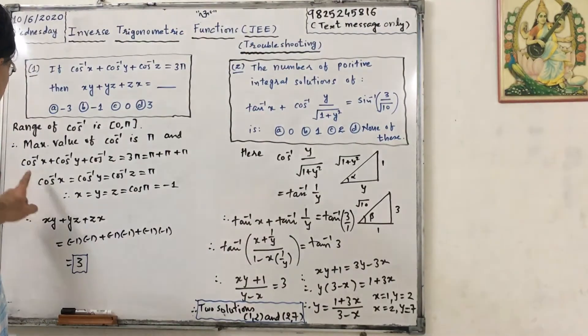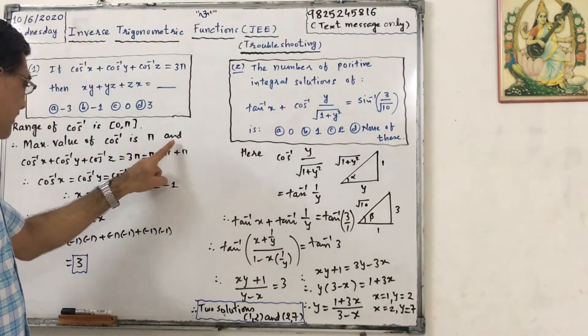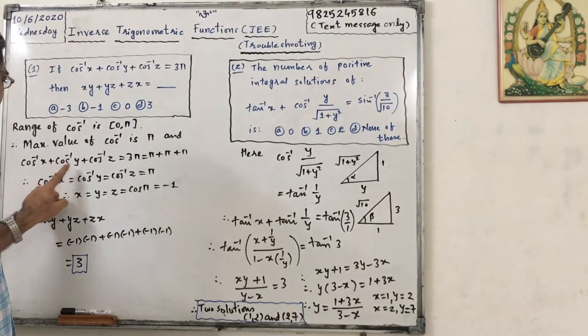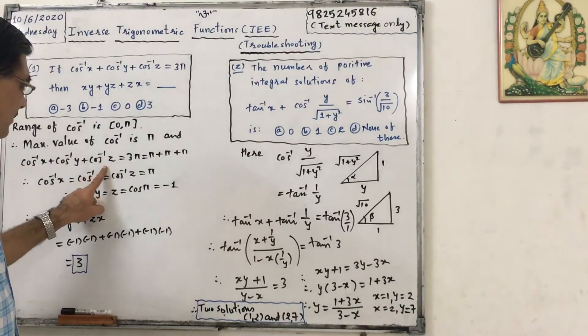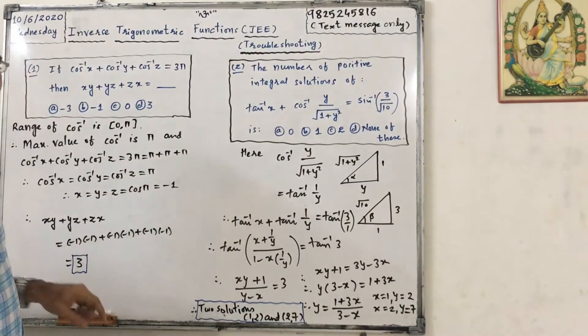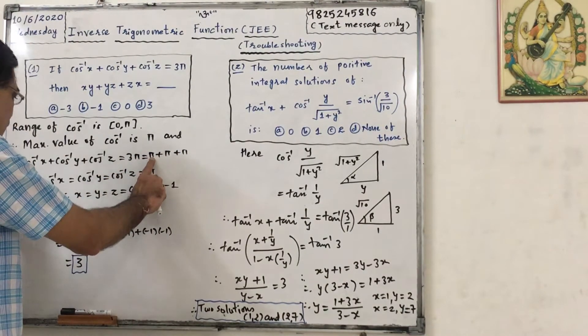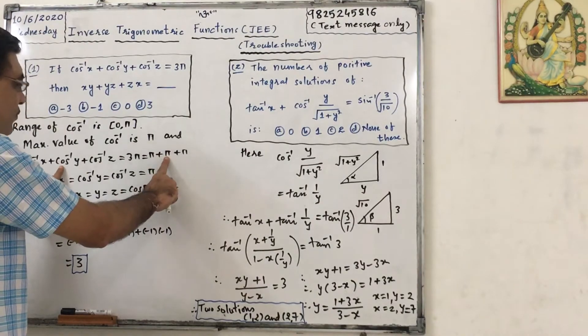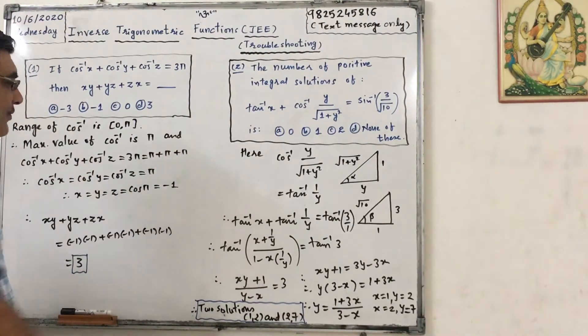So maximum value of cos inverse is pi and cos inverse x plus cos inverse y plus cos inverse z equals to 3 pi can be written as pi plus pi plus pi, that means cos inverse x equals to pi, cos inverse y equals to pi, cos inverse z equals to pi.